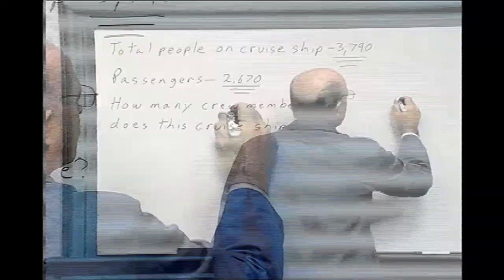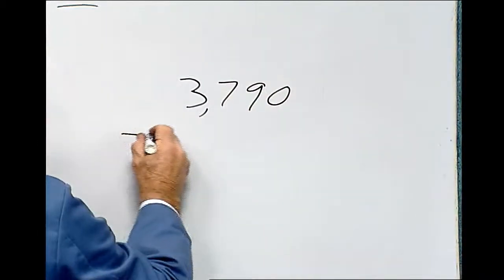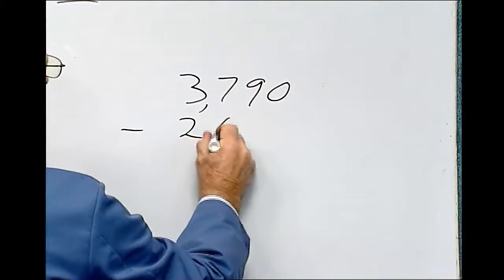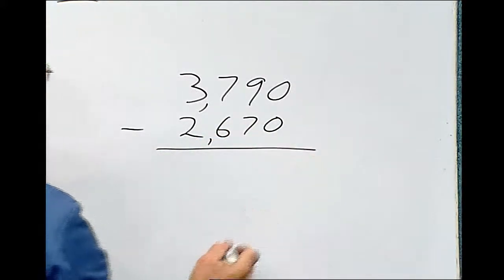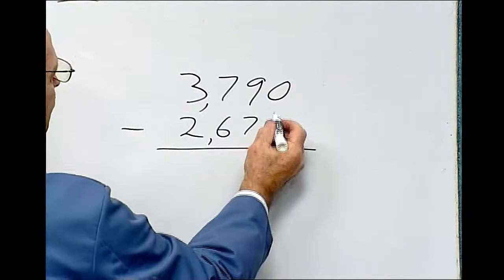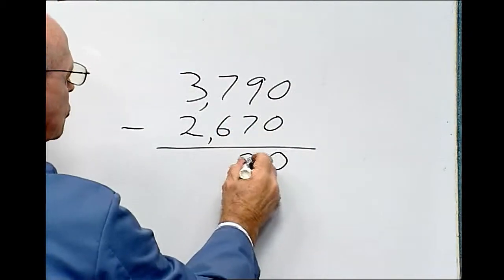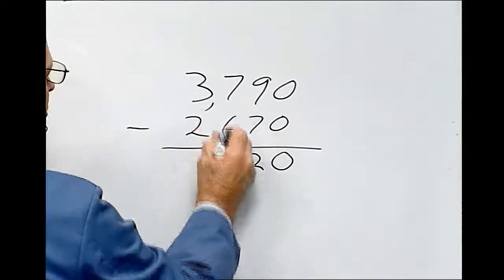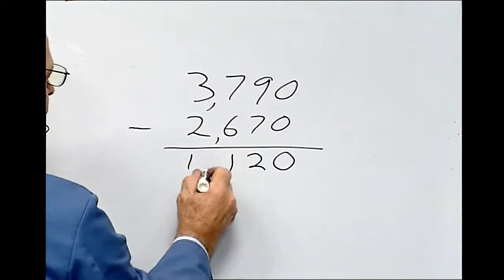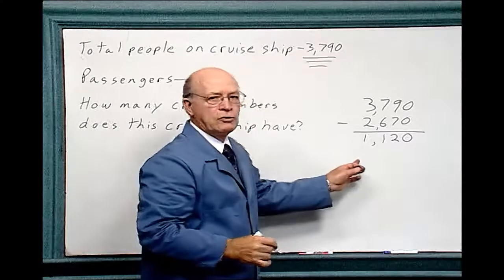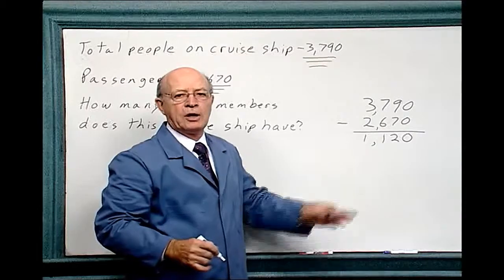So 3,790 take away 2,670. So 0 from 0 is 0, 7 from 9 is 2, 6 from 7 is 1, 2 from 3 is 1. So the cruise ship has 1,120 crew members.